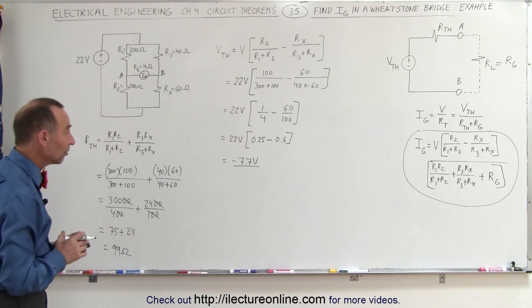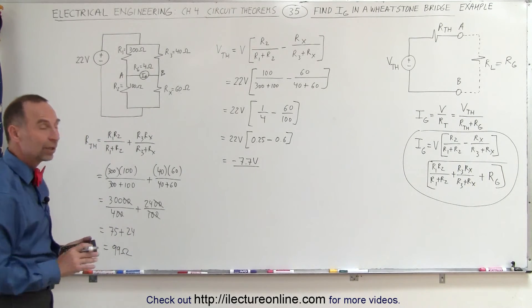So the resistance, the Thevenin resistance is 99 ohms. We can now find the current.